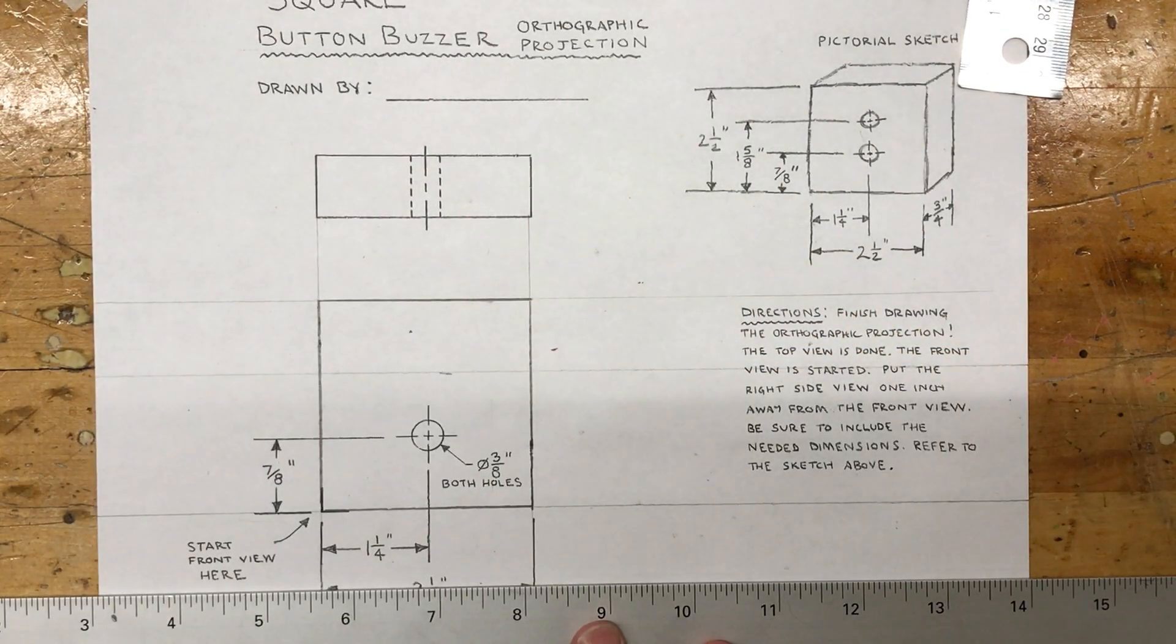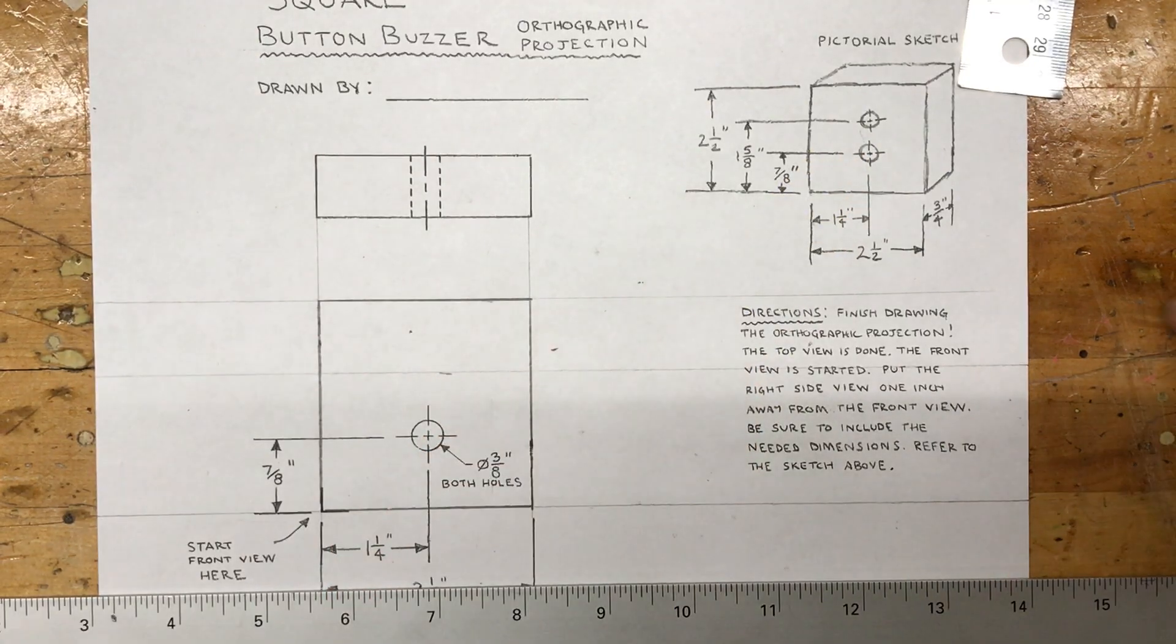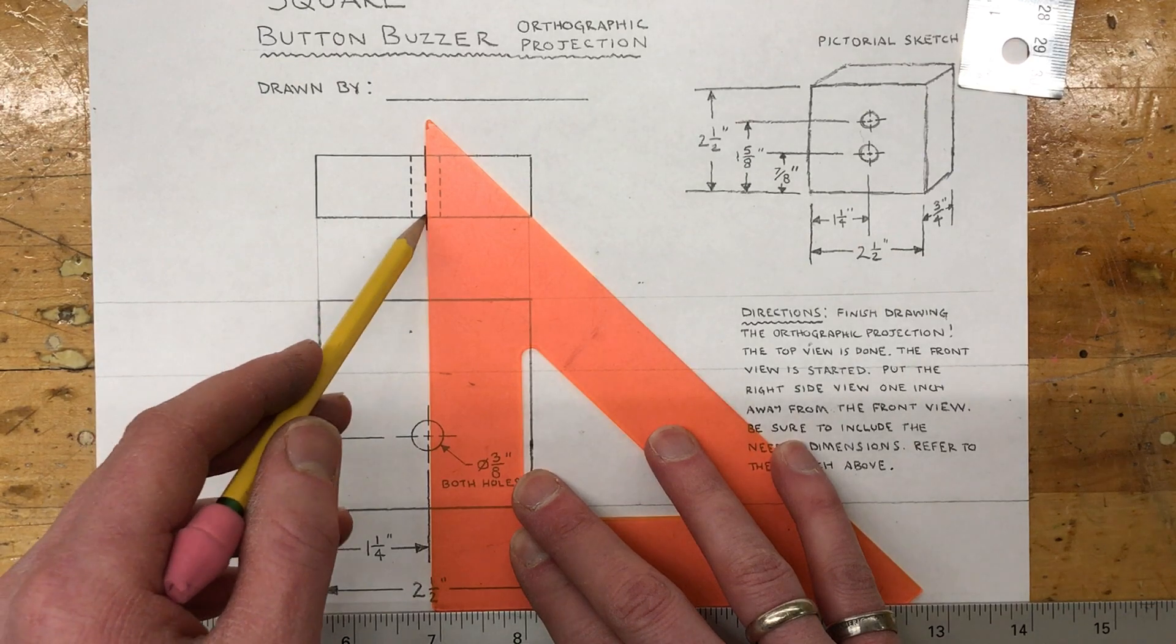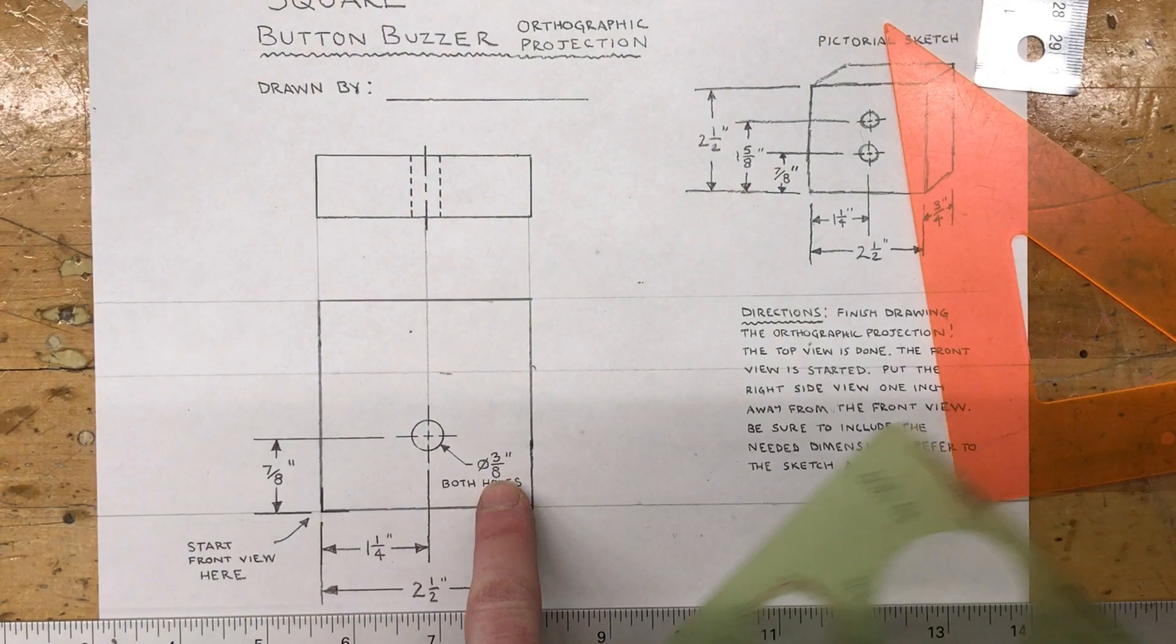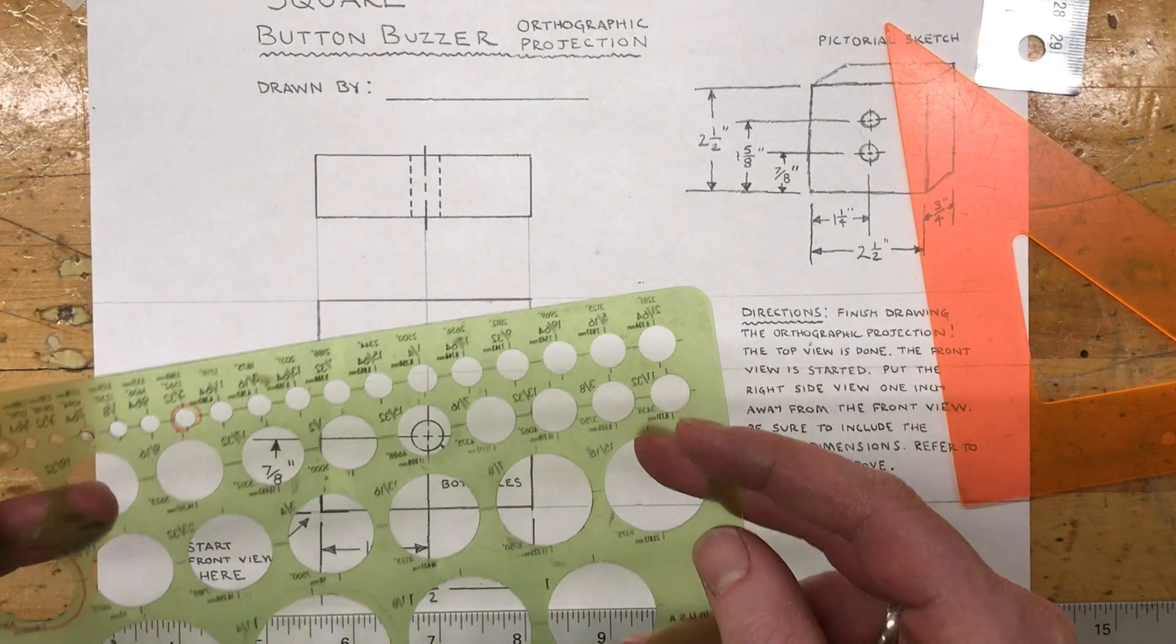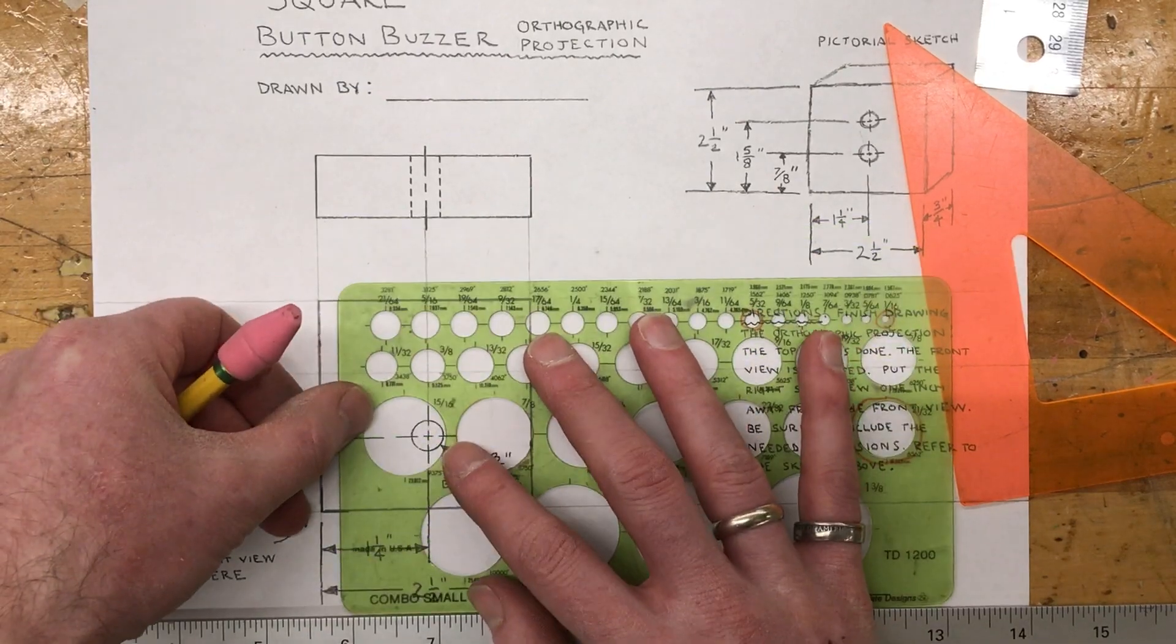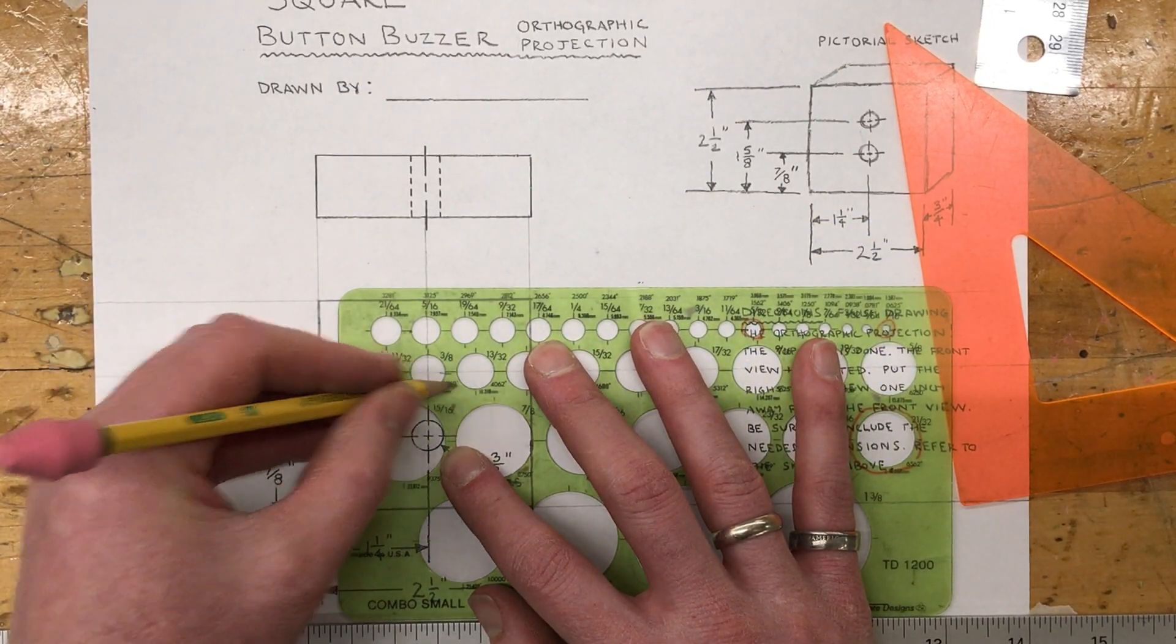That hole lines up with the other hole over here, so I can just extend this line up through the whole thing. And then at the intersection of those two lines, it says both holes are three-eighths of an inch. I'll take the three-eighths inch circle template, set it on that intersection - again right here is three-eighths - and I can draw that.